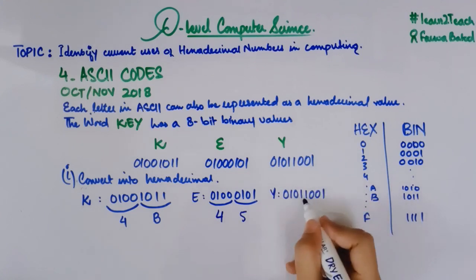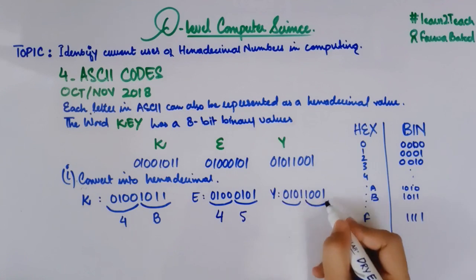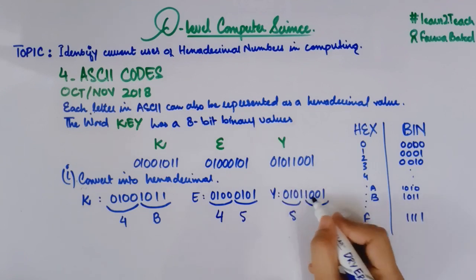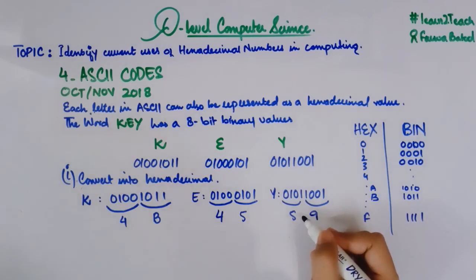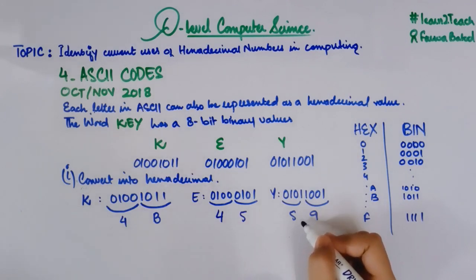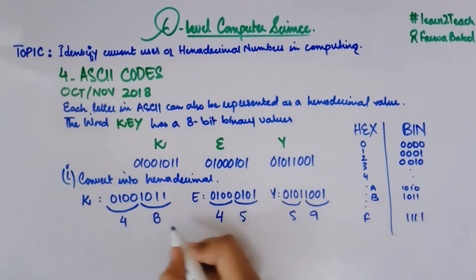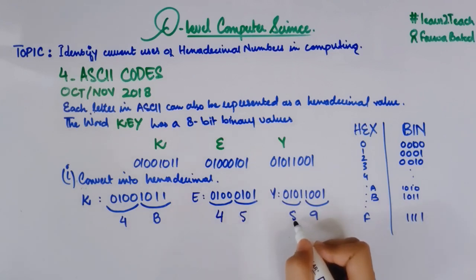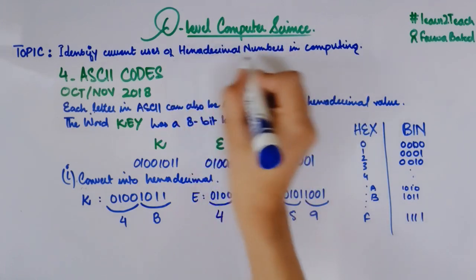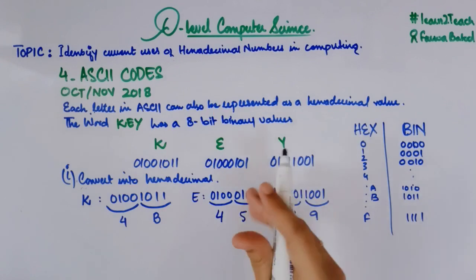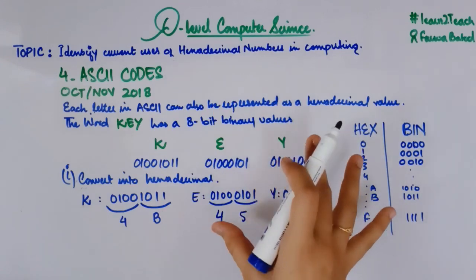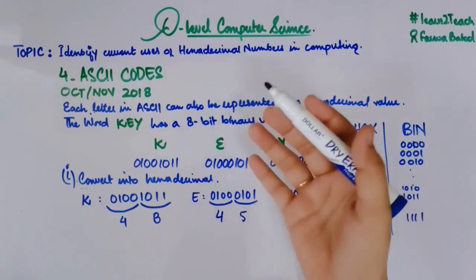For Y with binary 0 1 0 1 1 0 0 1: the upper four bits 0 1 0 1 is equal to 5, and the lower four bits 1 0 0 1 is equal to 9. So the hexadecimal value for Y is 59. These are the hexadecimal ASCII values for the characters K, E, Y — 4B, 45, 59.